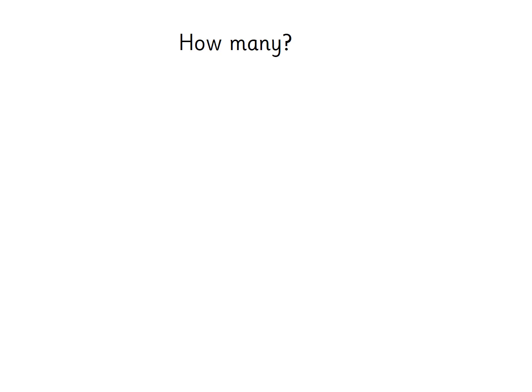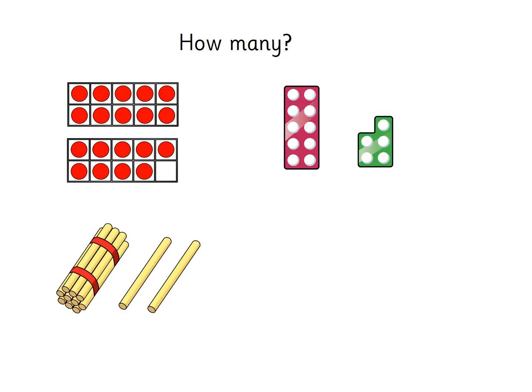Right, we're looking at numbers 11 to 20 again. Here are four different representations. We'll start with the tens frames with the red counters — point to that one at the top left. We know there's 10 in that full tens frame, so we don't need to count those. Let's count on: 11, 12, 13, 14, 15, 16, 17, 18, 19. So we've got 19.